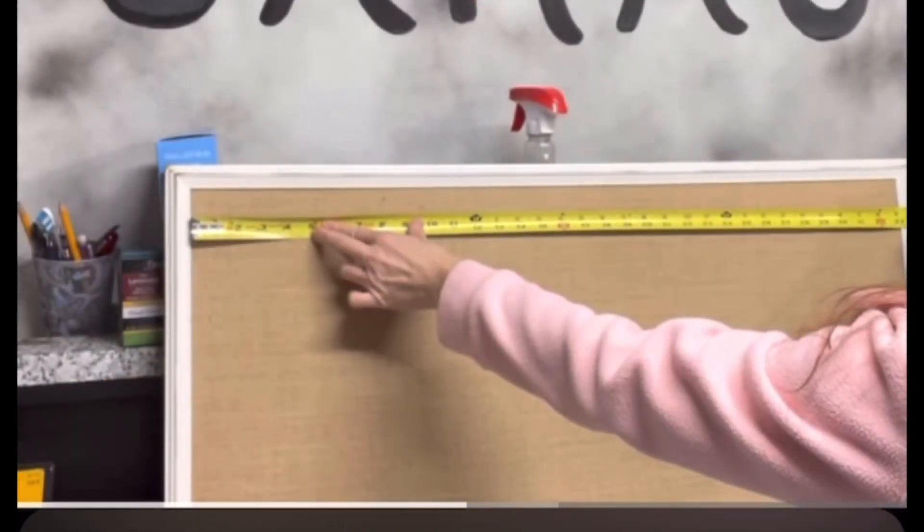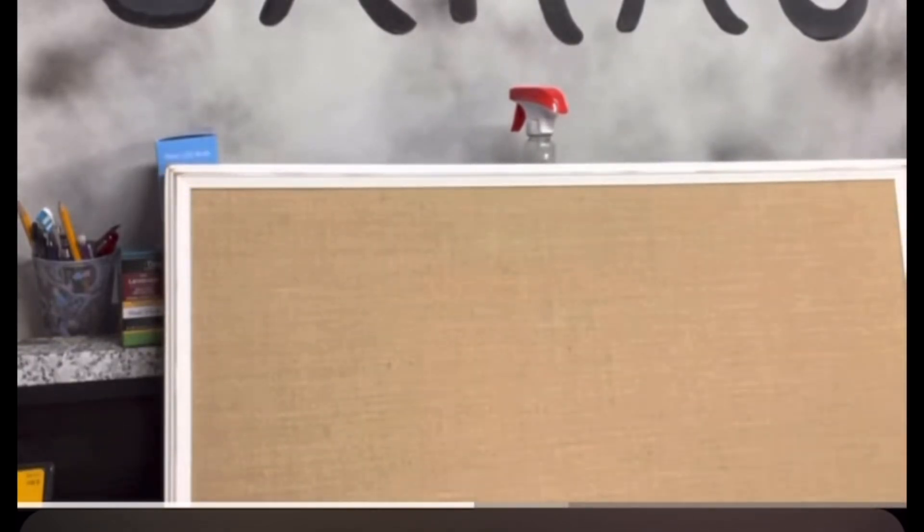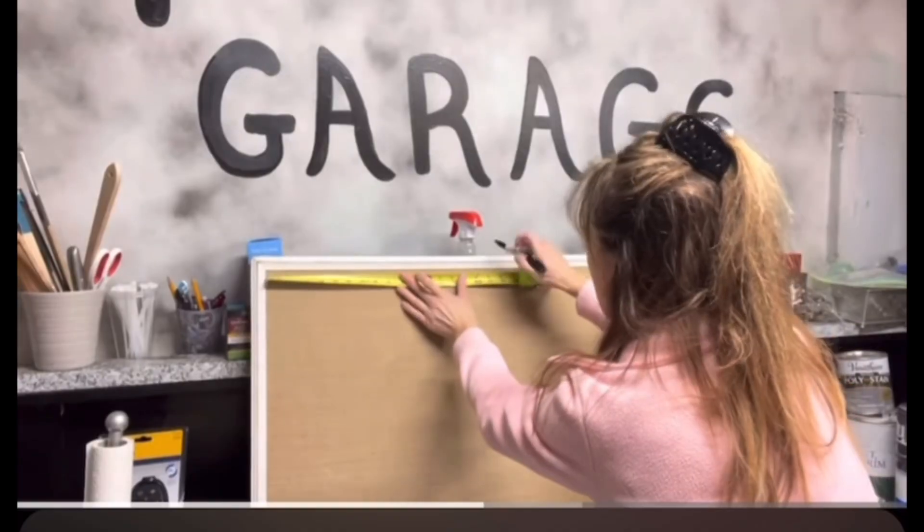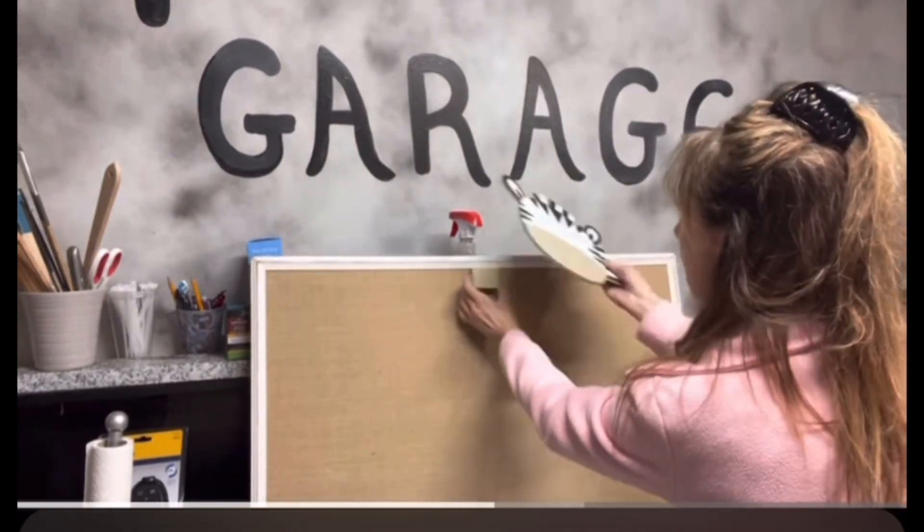Now to measure the length of the board to find the center point for the block of wood. I want Mr. Zebra centered right in the middle.